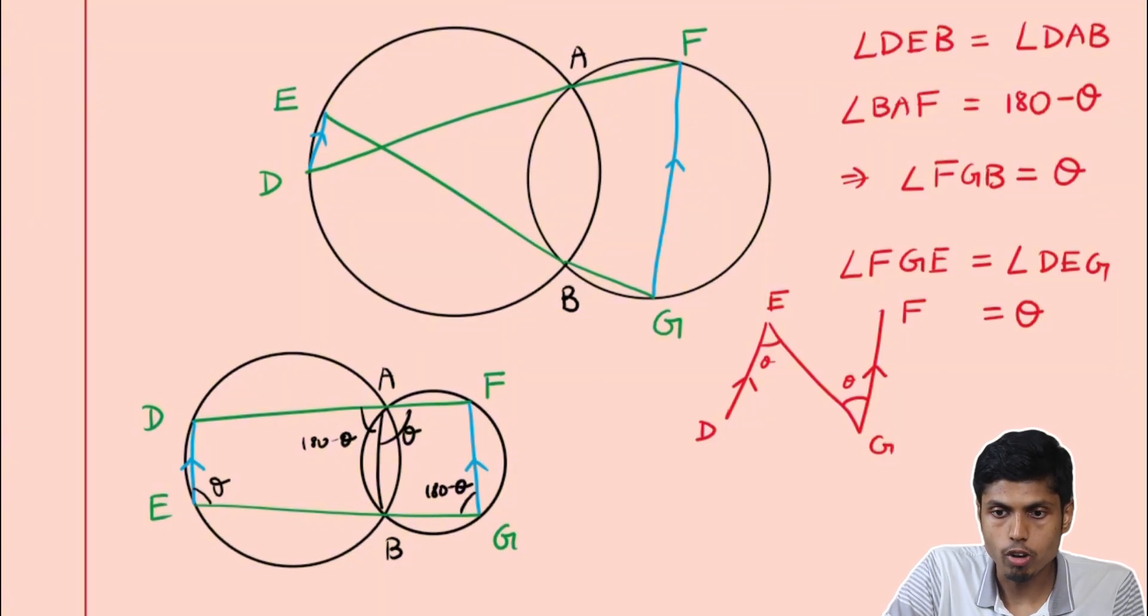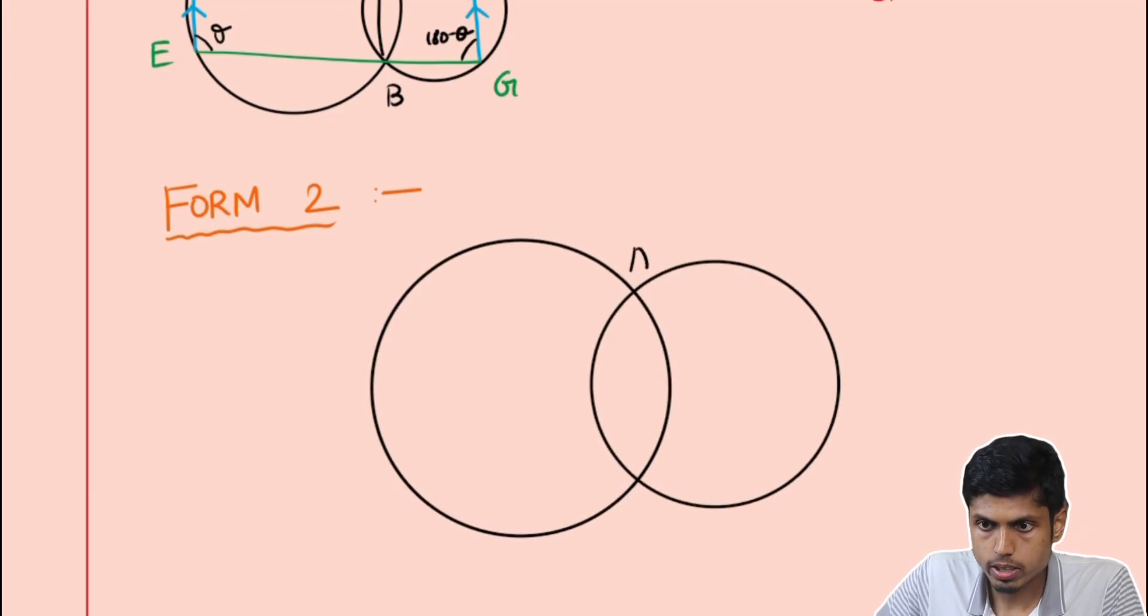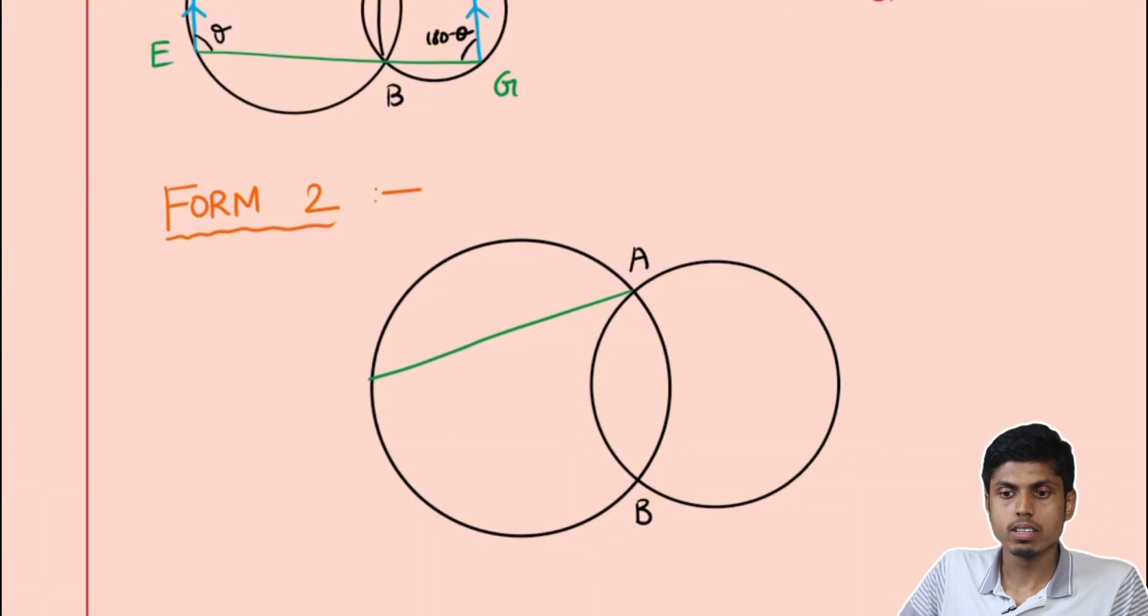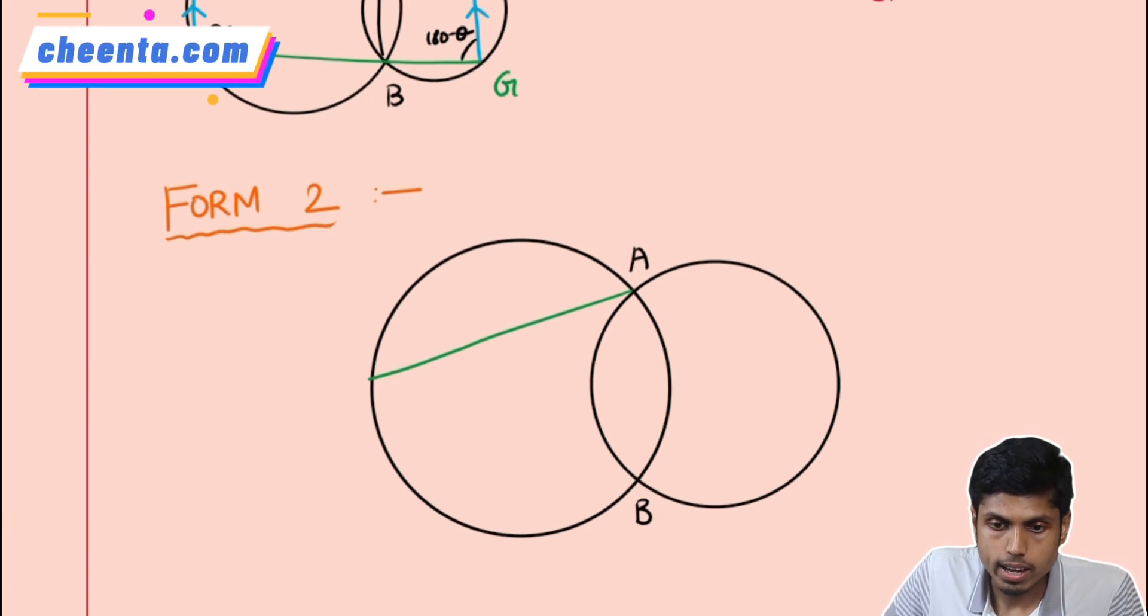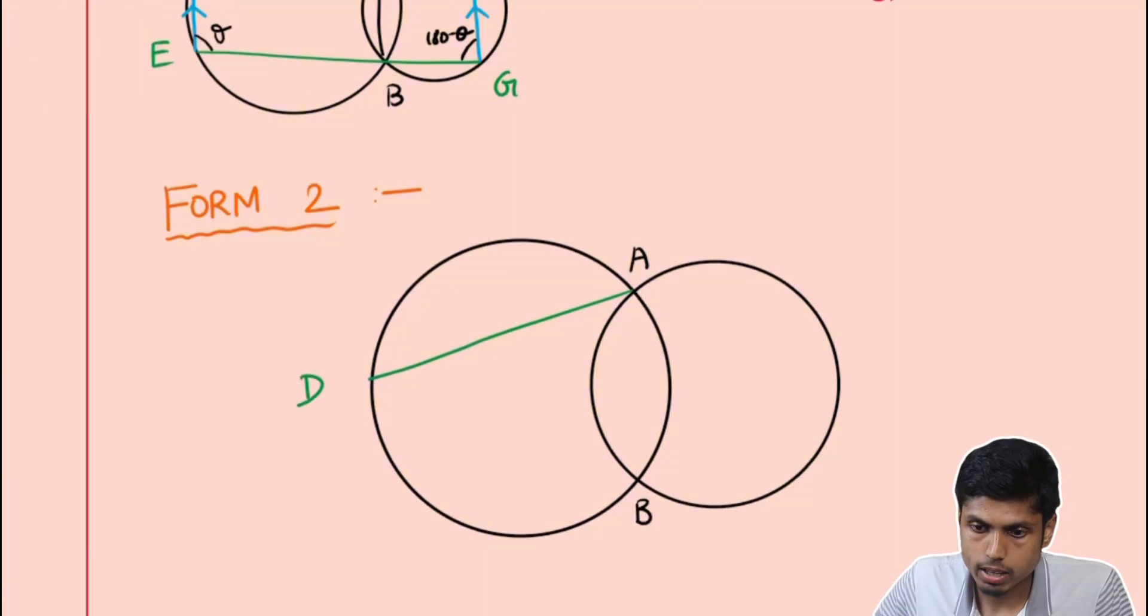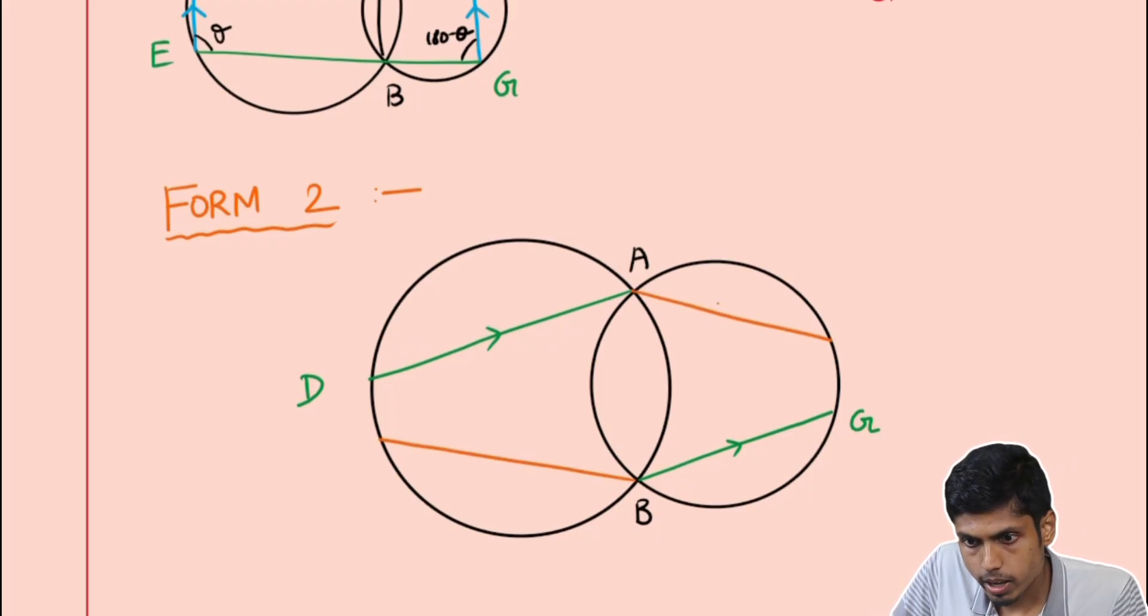Let's go to form 2 of Riem's theorem. Again I have two circles intersecting at points A and B. Now I do not consider lines that are forming three collinear points, rather alternating lines are forming parallel lines. That is AD is parallel to BG now, and then you have BE parallel to AF.